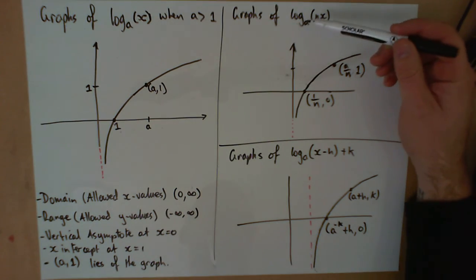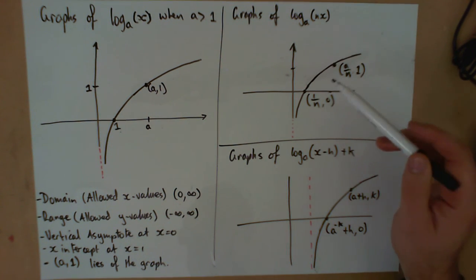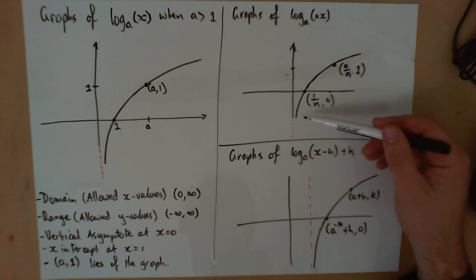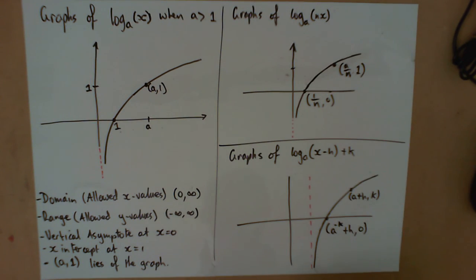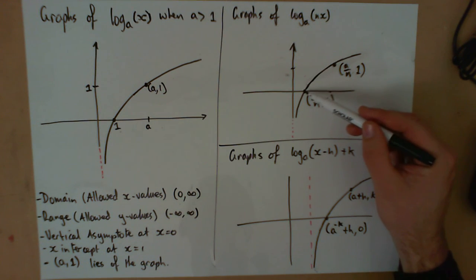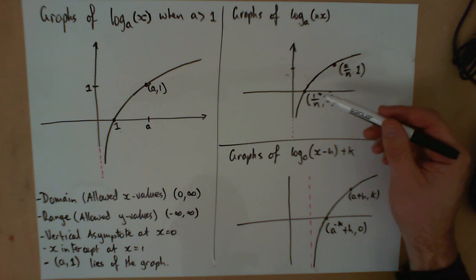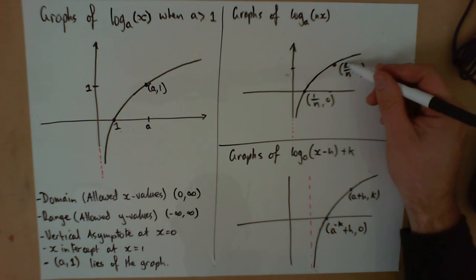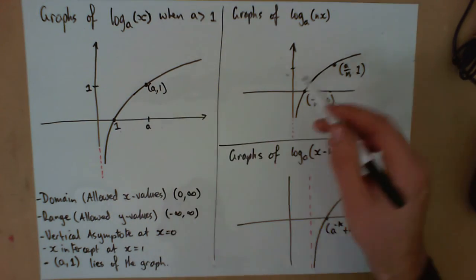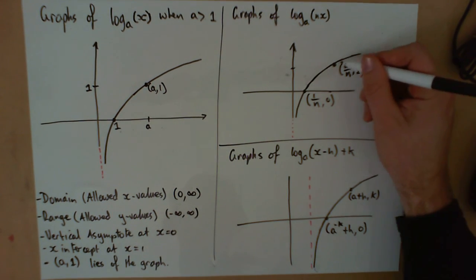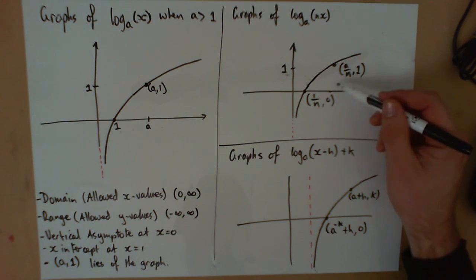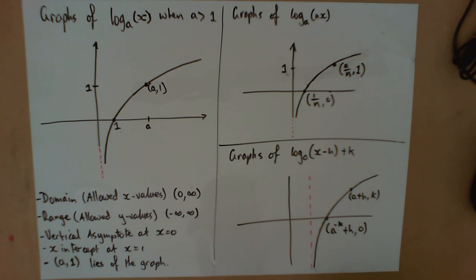What happens if we have a graph of log to the base a of nx — with this multiplying value n inside? That's a dilation factor, and it squishes things up a little. We don't get a change in our vertical asymptote, but we do get a change in our x-intercept — we divide one by n to get our new x-intercept. And the point that was at (a, 1) is now at (a/n, 1). So the x values of those two key points have just been divided by n; the y values haven't changed.